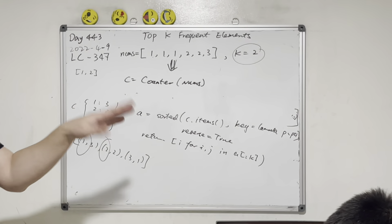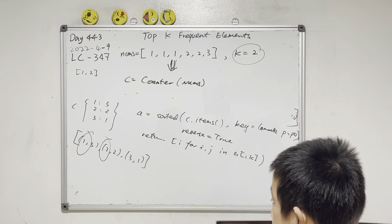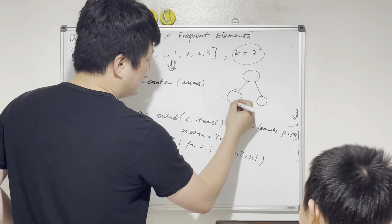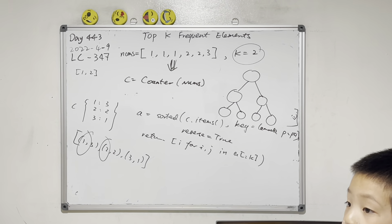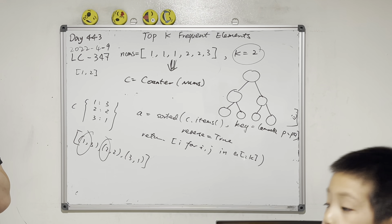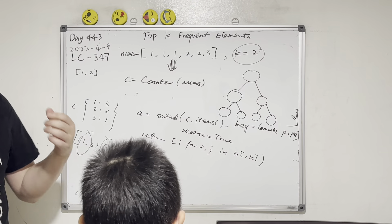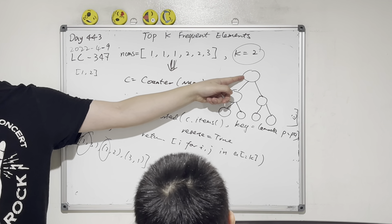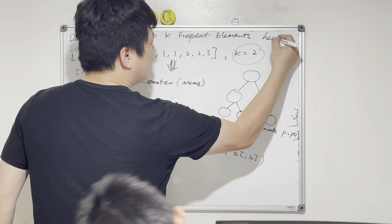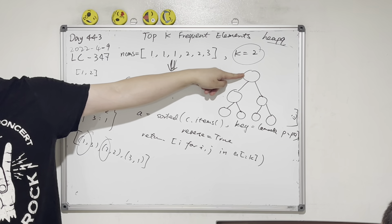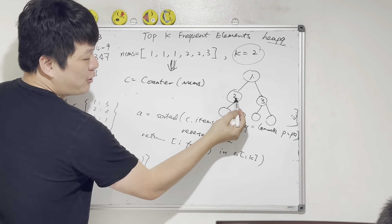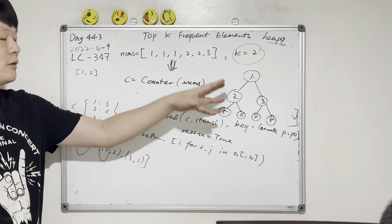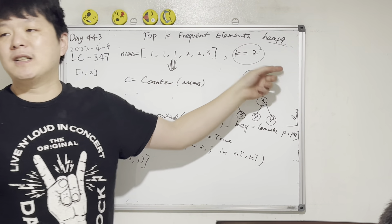That's the second method — sorting is O(n log n). Now what about heap? The priority queue is based on a binary heap. In Python, heapq is a min-heap by default, meaning the root is the smallest. So for example root could be 1, with children 2 and 3, and 2 is smaller than 5 and 6, and 3 is smaller than 7 and 8.